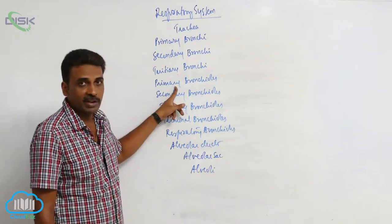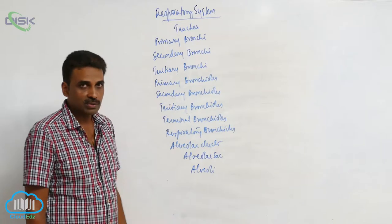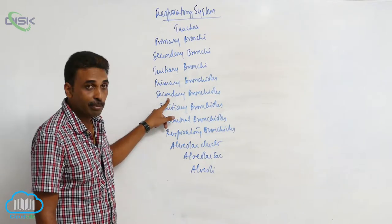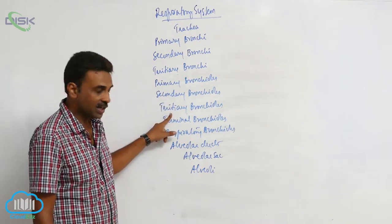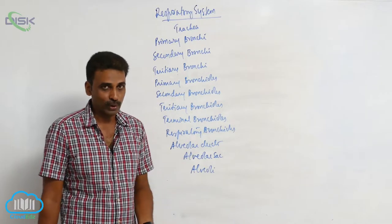The tertiary bronchi will divide into bronchioles: primary bronchioles, secondary bronchioles, tertiary bronchioles, terminal bronchioles, and respiratory bronchioles.